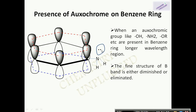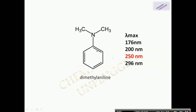It is also important that the n orbitals and the pi orbitals should be planar to each other. If they are not planar, there will be no conjugation or electron transfer from n orbitals to the pi orbitals. For example, in dimethylaniline, the nitrogen atom has one lone pair of electrons. Dimethylaniline shows absorption bands at 176nm, 200nm, 250nm, and 296nm. The bands at 176, 200, and 296nm are due to the aromatic system, but the band at 250nm is due to electron transfer from the n orbital of nitrogen to the pi orbital system of benzene.